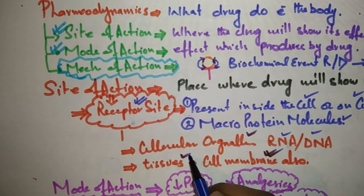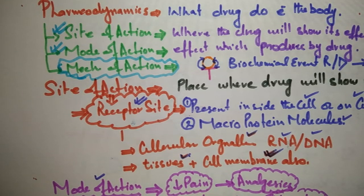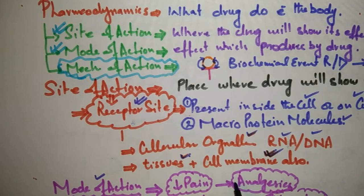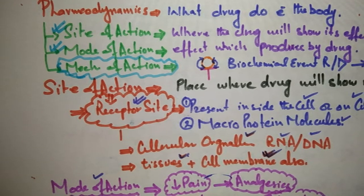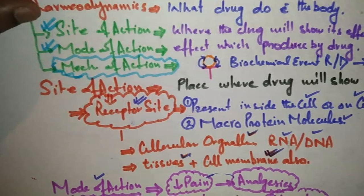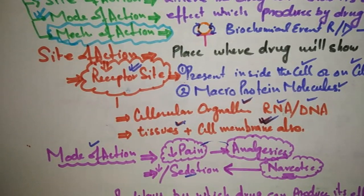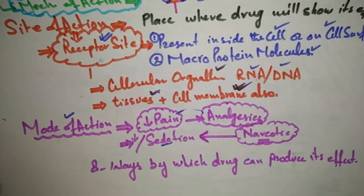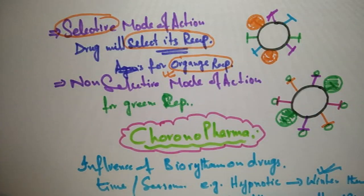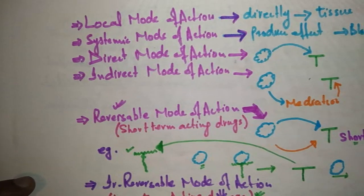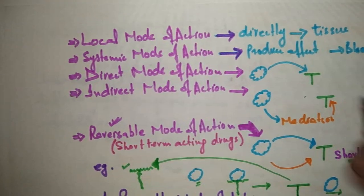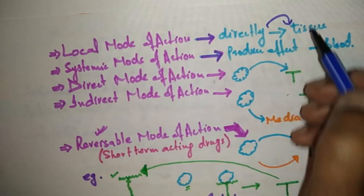Then we have mode of action, which means the effect produced by a drug. For example, narcotic drugs can decrease pain and cause sedation, and analgesic drugs can reduce pain. We have eight different ways by which a drug can produce its effect. We have local mode of action, where the drug directly affects the tissues.